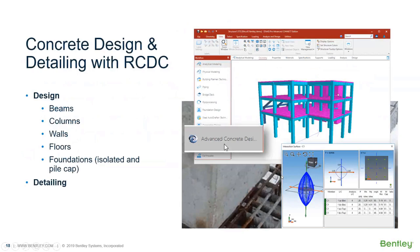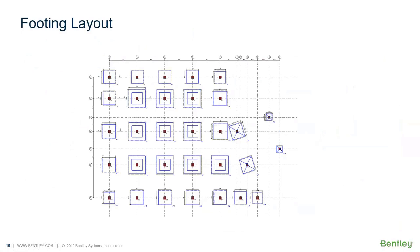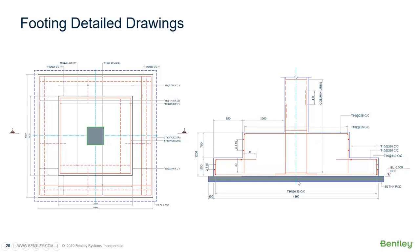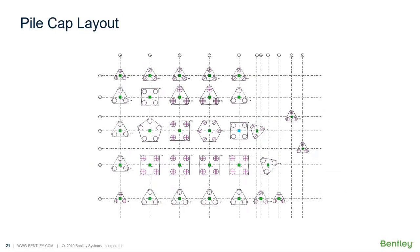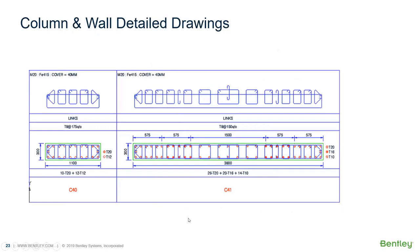This image shows the column design portion in RCDC. The model was created by RAM Structural System and design is performed by RCDC. The footing layout, detailed drawings, pile cap layout, column and wall detail drawings — these are all features in RCDC. These are typical drawings and layouts produced by the software.